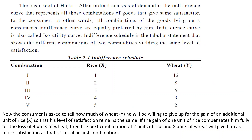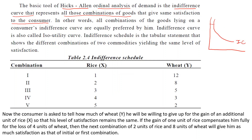The two main economists who contributed to this analysis are Hicks and Allen. The basic tool of Hicks and Allen's ordinal analysis of demand is the indifference curve, which represents all those combinations of goods that give the same level of satisfaction to the consumer. Suppose this is indifference curve IC1 showing all combinations of goods X and Y — here is good X and here is good Y. All combinations lying on this indifference curve give the same level of satisfaction to the consumer.